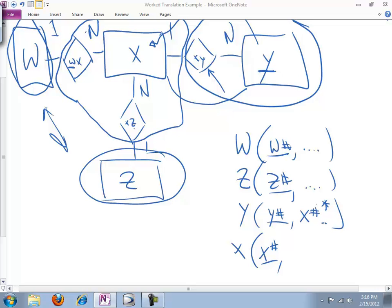And we forgot Y has whatever other attributes Y would have associated with it. And X has the foreign key W from this relationship, as well as the foreign key Z from this relationship. So we have W number as a foreign key. And we have Z number. Hang on here. That's not quite right. We have Z number also as a foreign key.